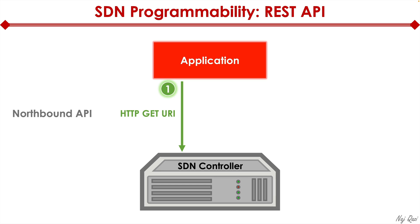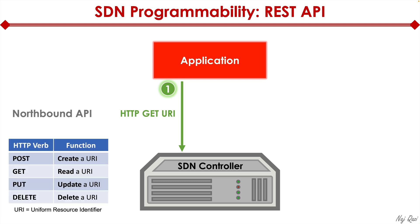Before I go any further, let me first explain the HTTP verbs. So here are the four HTTP verbs that are used by the REST API: POST, GET, PUT, and DELETE. HTTP POST means to create a URI — and URI stands for Uniform Resource Identifier, which is a fancy term for an object. So basically HTTP POST means create an object. HTTP GET means read an object. HTTP PUT means to update an object. And HTTP DELETE means to delete an object.